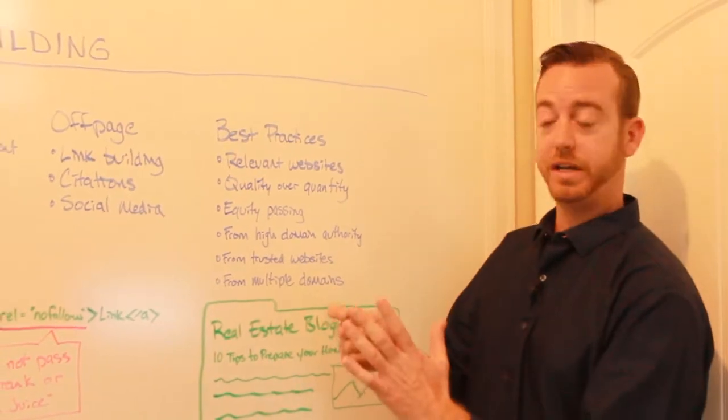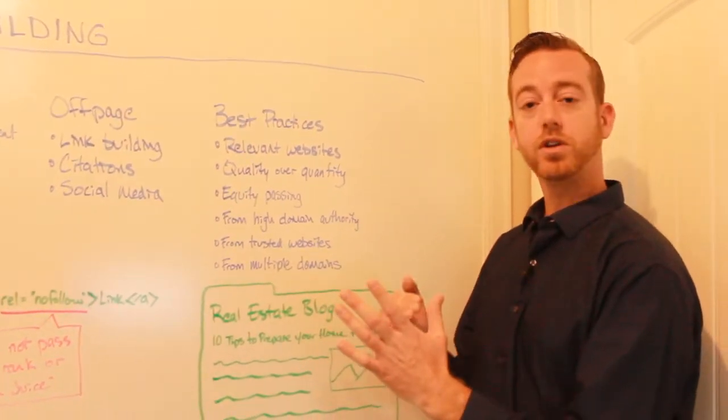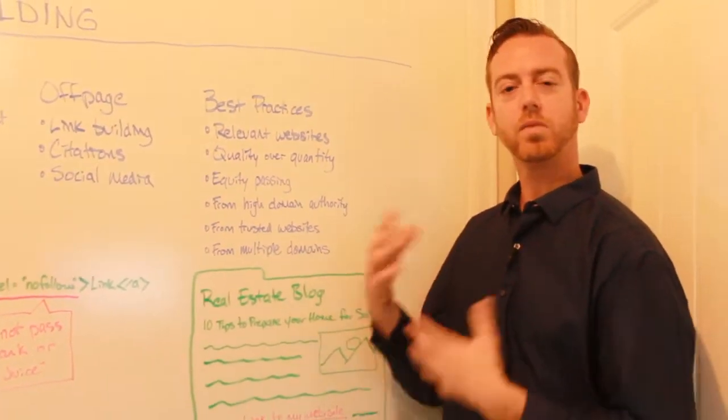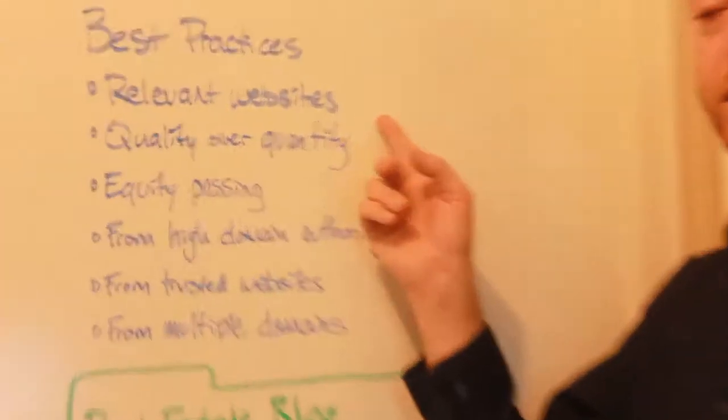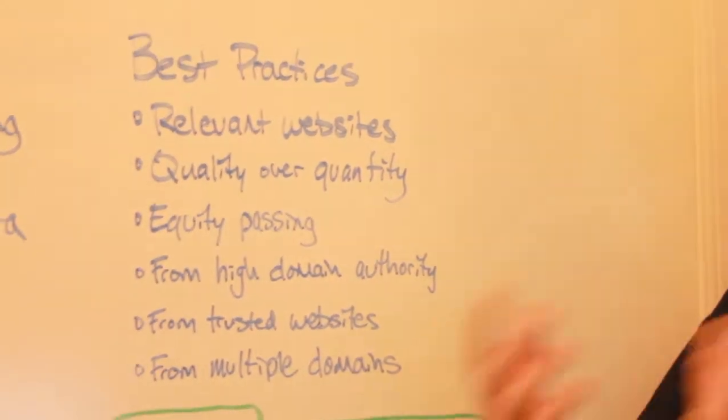You'd want links from a mortgage company. That's a supporting industry or a construction company or even landscaping. Those are all related to the real estate industry. Google's going to recognize the links that are pointing over to your site. You go, this is good.